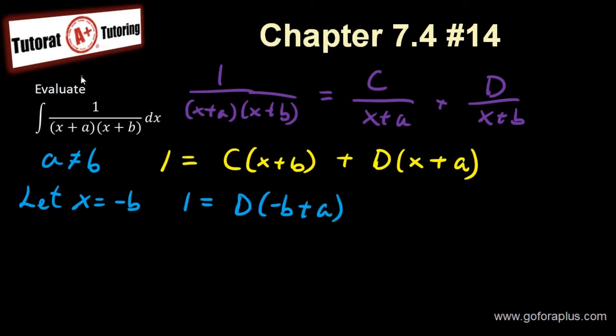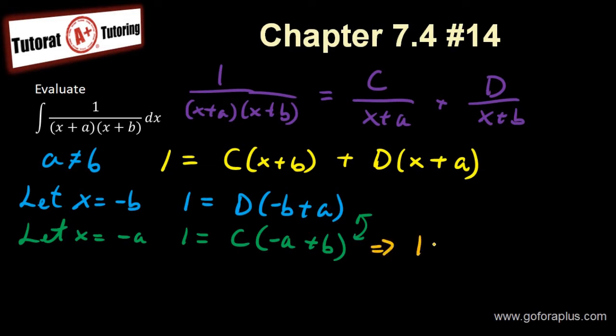If I let x equals to minus a, so I get 1 equals to c times (-a+b). Now, as you see here, the difference between this one and this one is just the sign, the sign difference. So I know that if I rewrite this into 1 equals to minus c, I have minus b plus a.